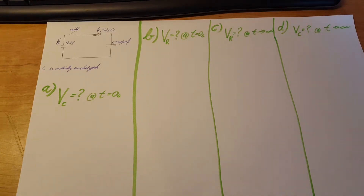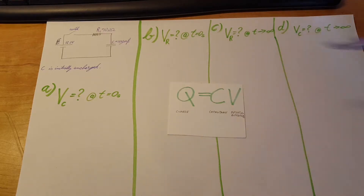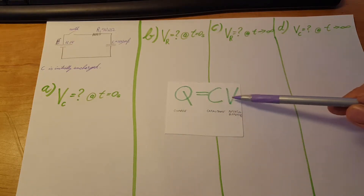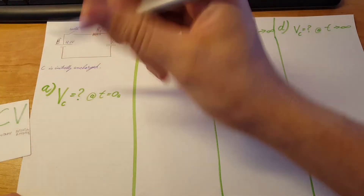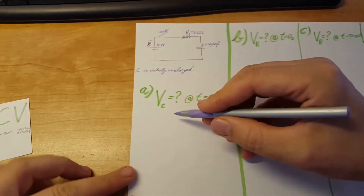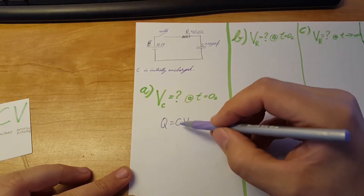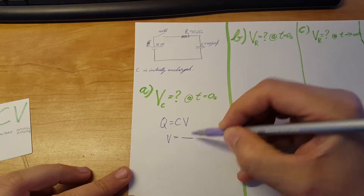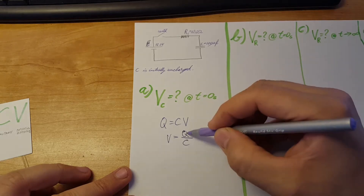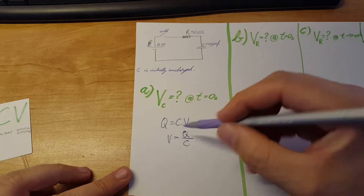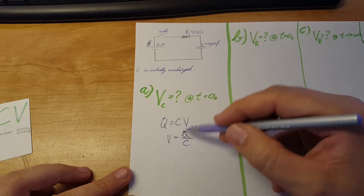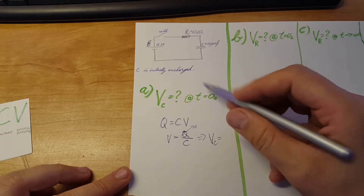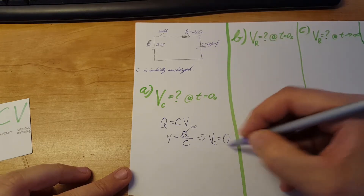Part A: voltage across the capacitor at T=0. Since the capacitor is uncharged, we use Q = CV. Since Q is zero, solving for V gives V = Q/C = 0. Therefore the voltage across the capacitor at the instant the switch is closed is zero volts.